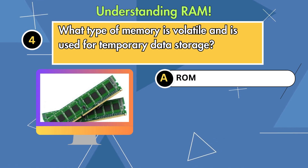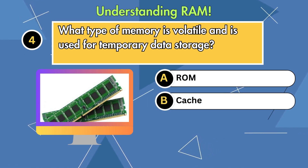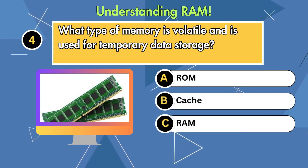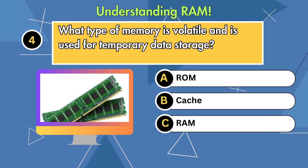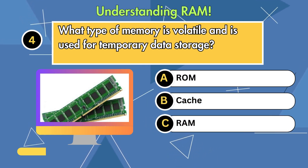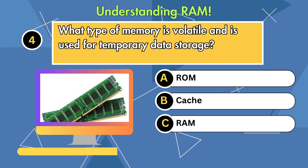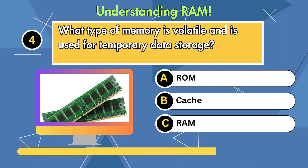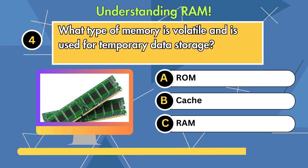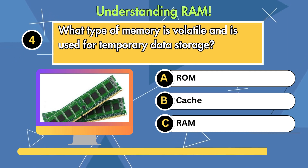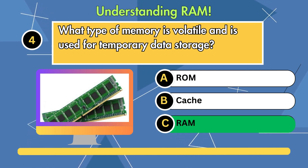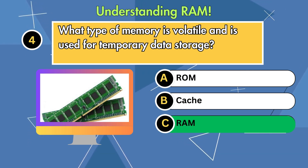Question 4. What type of memory is volatile and is used for temporary data storage? Option 1: ROM. Option 2: Cache. Option 3: RAM. Answer is RAM.